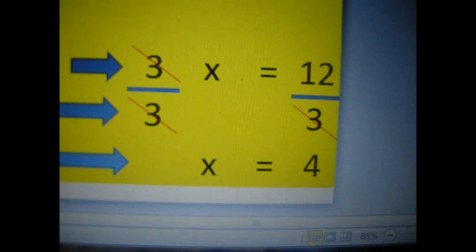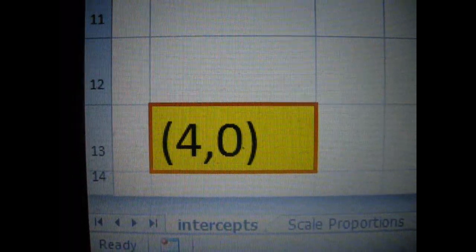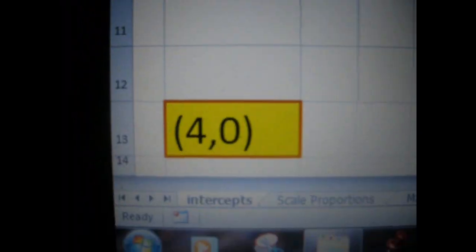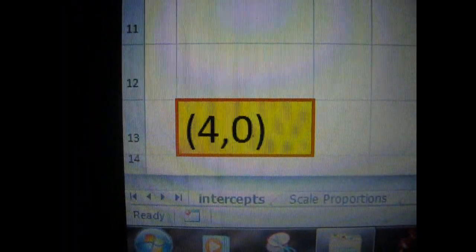So X equals 4. Bring it over here. The coordinates are 4 for X and 0 for Y.